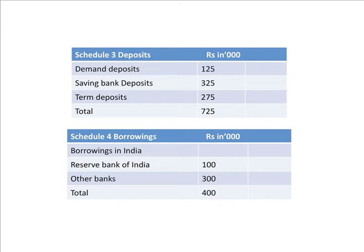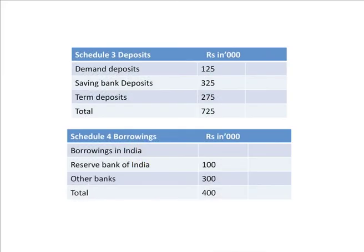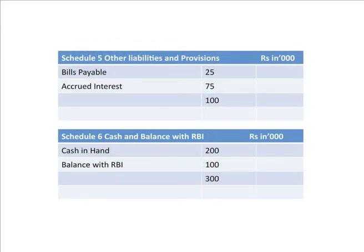The three deposit items were already identified as going in schedule 3. Schedule 4, borrowings: borrowings from Reserve Bank of India is 100, other banks 300, total borrowings 400. Schedule 5, other liabilities and provisions: bills payable is 25 and accrued interest is 75, aggregating to 100. Schedule 6, cash and balance with RBI: cash in hand is 200, balance with RBI is 100, schedule 6 total is 300.